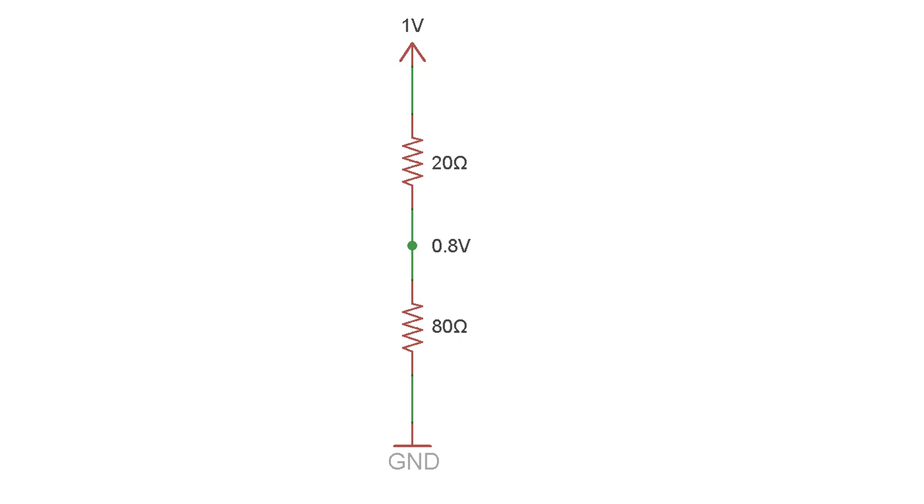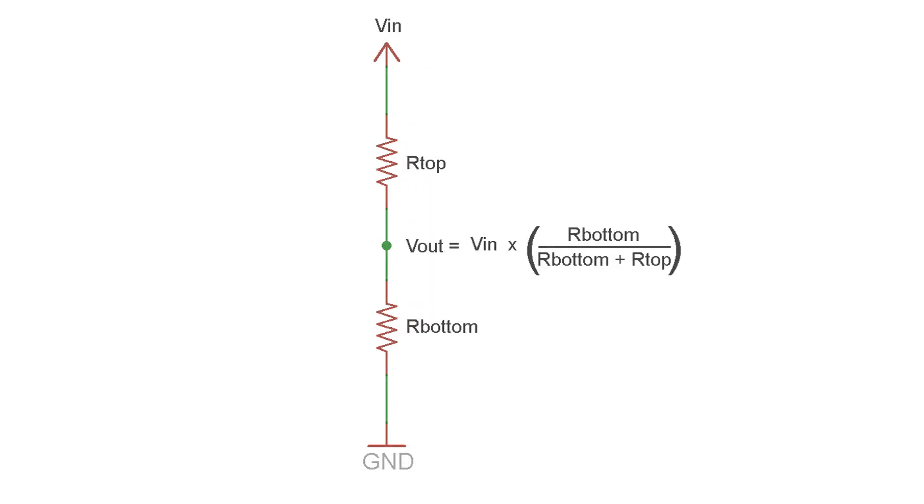If I flip the position of these resistors, now with 80% of the resistance on the bottom, you get 80% of the input voltage on the output. Incidentally, voltage dividers will work just fine with both AC and DC input voltages,